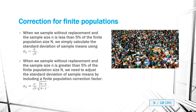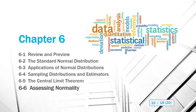There's a correction we need to make for finite populations. When sampling without replacement with sample size n that is less than 5% of the finite population size N, we calculate the standard deviation of the sample means using the standard formula. However, if the sample size is greater than 5% of the finite population size, we need to adjust with a finite population correction factor: sigma over root n, multiplied by the square root of (N minus n) over (N minus 1). This corrects for additional bias that grows with larger sample sizes.